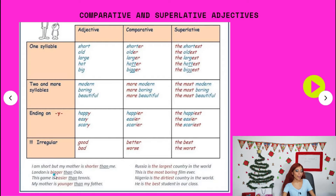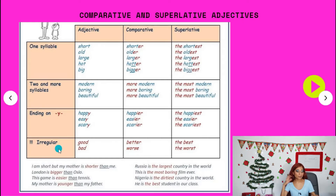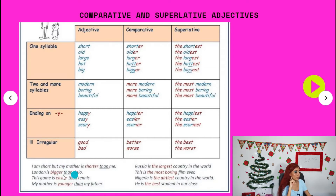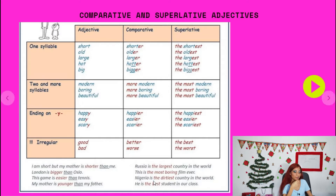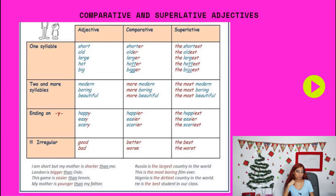Here are some examples. I am short, but my mom is shorter than me. London is bigger than Oslo. This game is easier than tennis. My mother is younger than my father. For superlatives: Russia is the largest country in the world. This is the most boring film ever. Nigeria is the dirtiest country in the world. He is the best student in our class. Remember to use 'than' with comparatives — bigger than, shorter than, easier than.